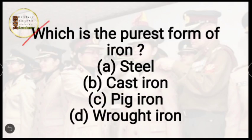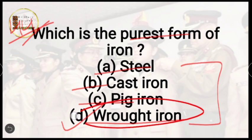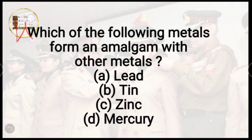Question number 44: which is the purest form of iron? Options are steel, cast iron, pig iron, or wrought iron. The correct answer is option D, wrought iron. It contains around 0.12 to 0.25% carbon, which is why it is the purest form of iron.